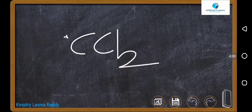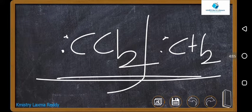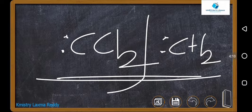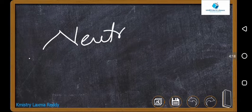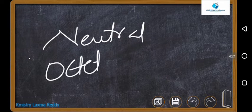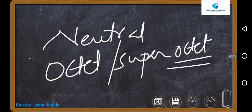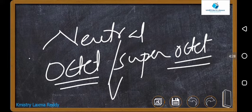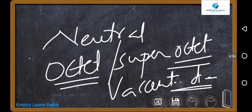Carbenes — like dichlorocarbene and methylene carbene — are also neutral, so you can consider all carbenes under the neutral electrophile category as well. Then there are a few more neutral examples where the octet is complete or exceeded, but they can still accept electrons due to the presence of vacant d-orbitals.